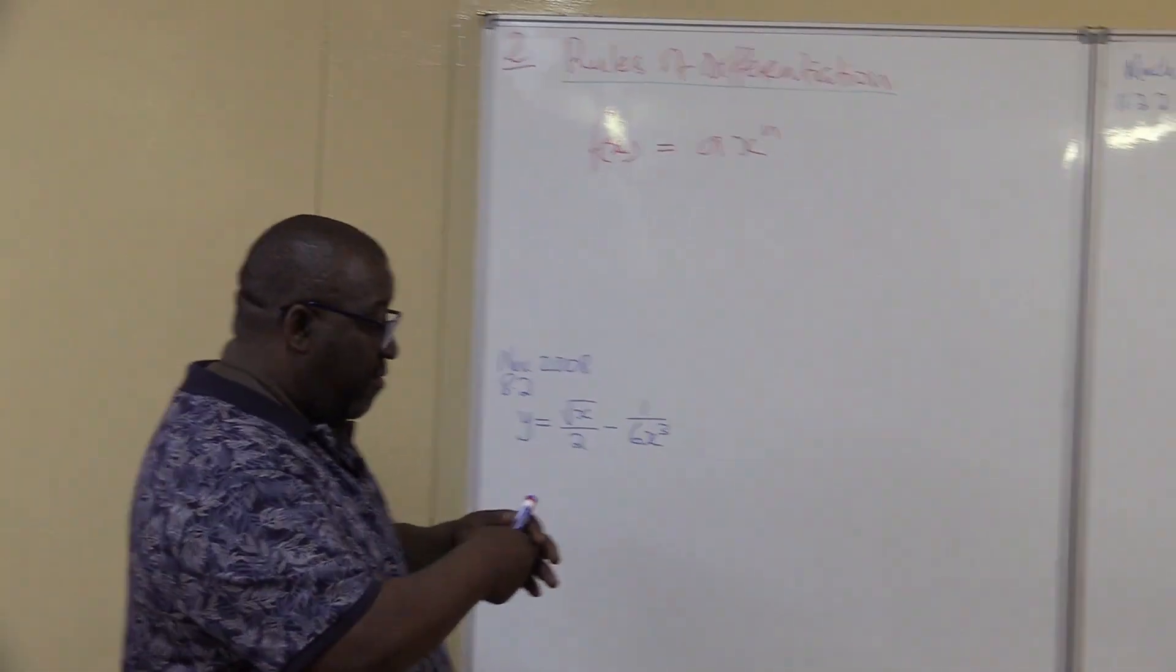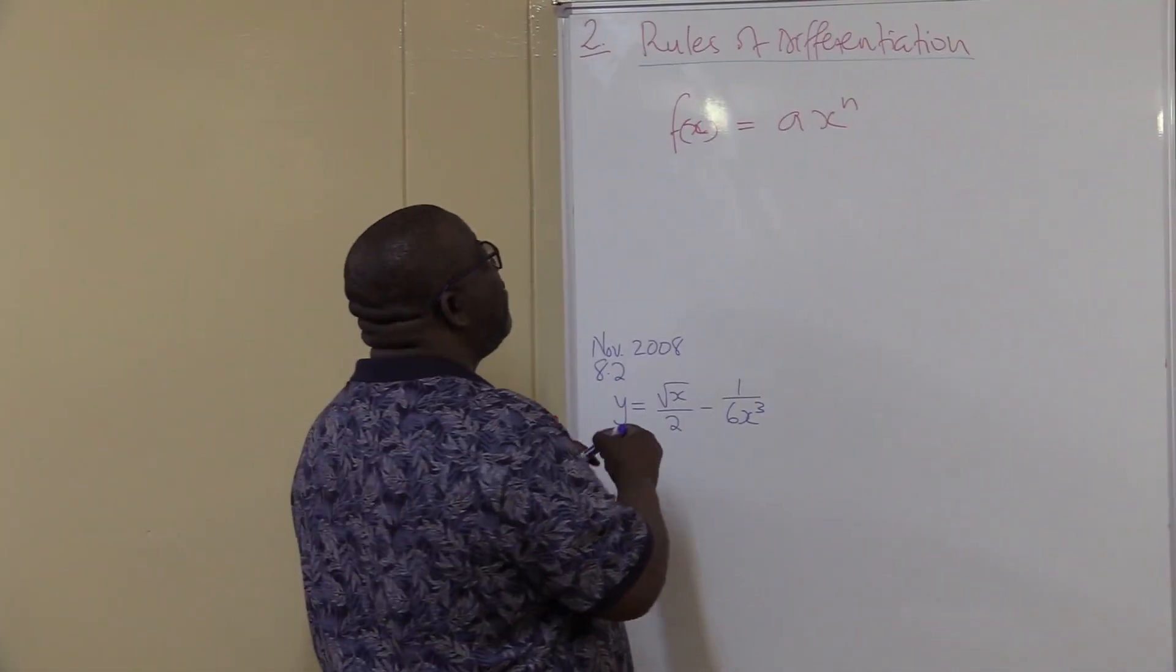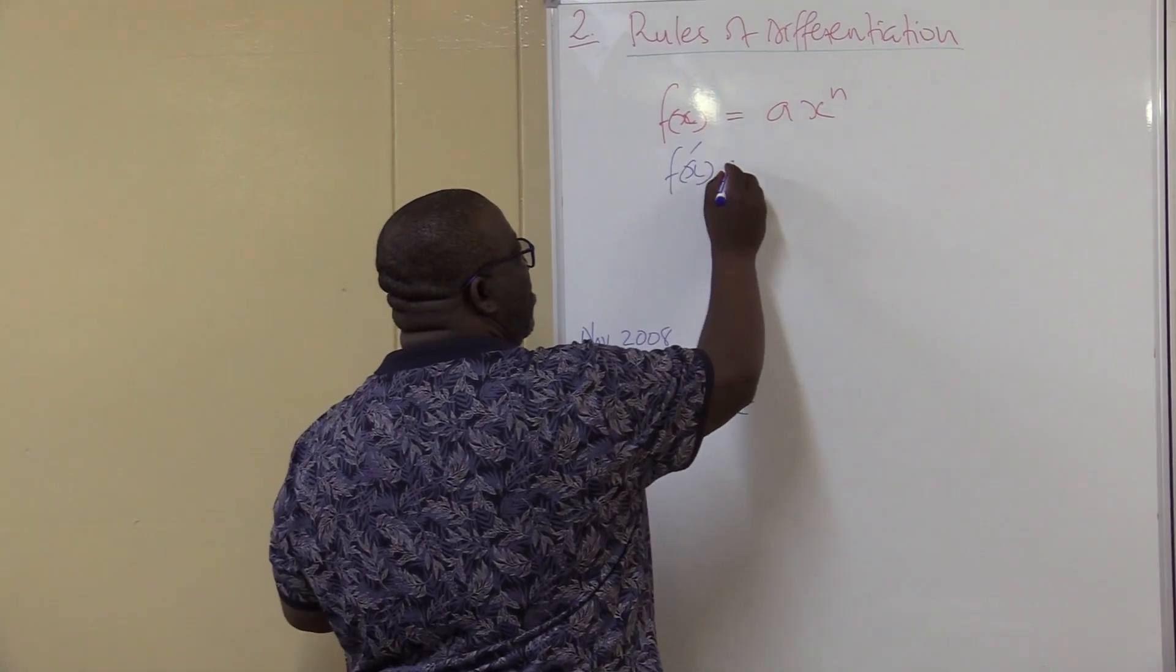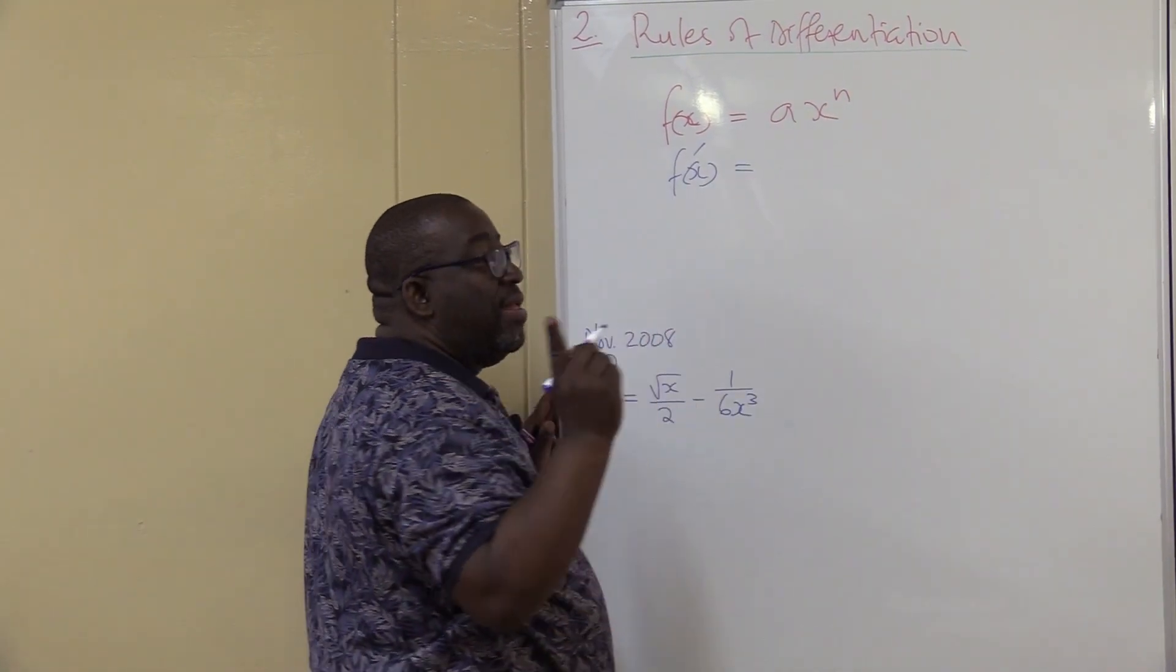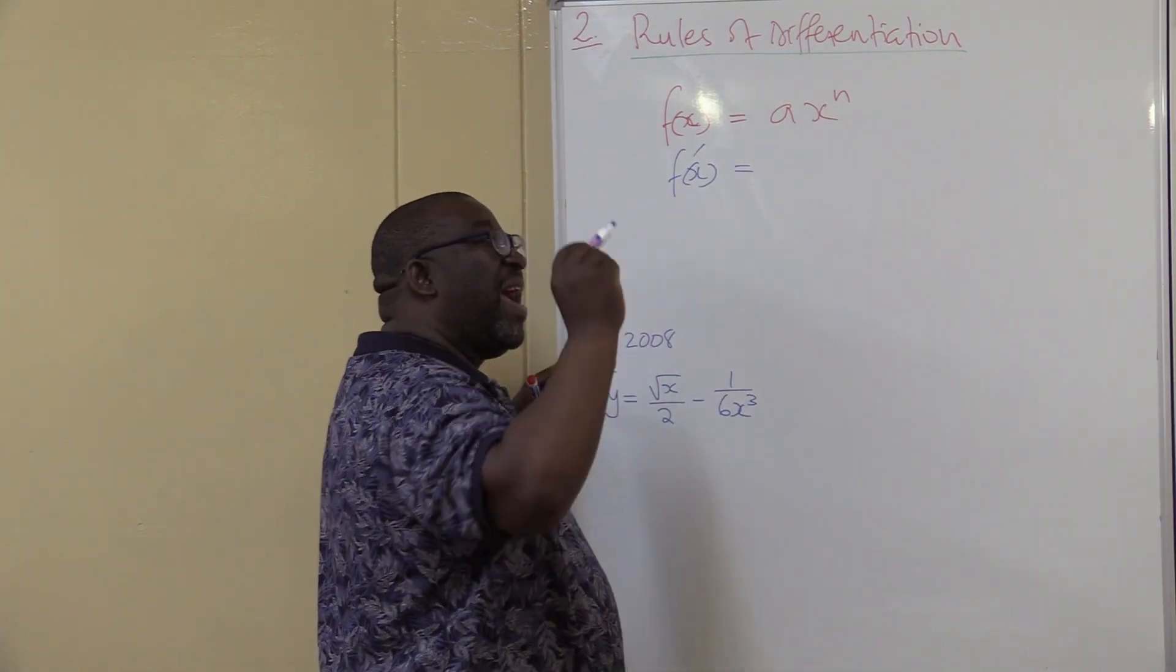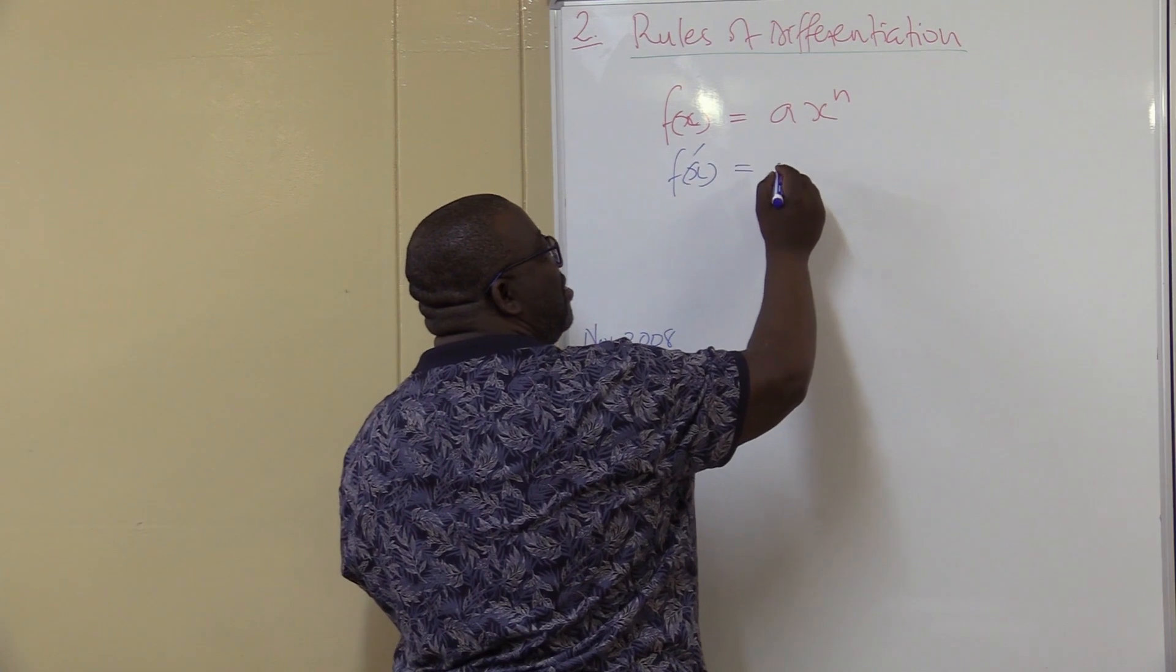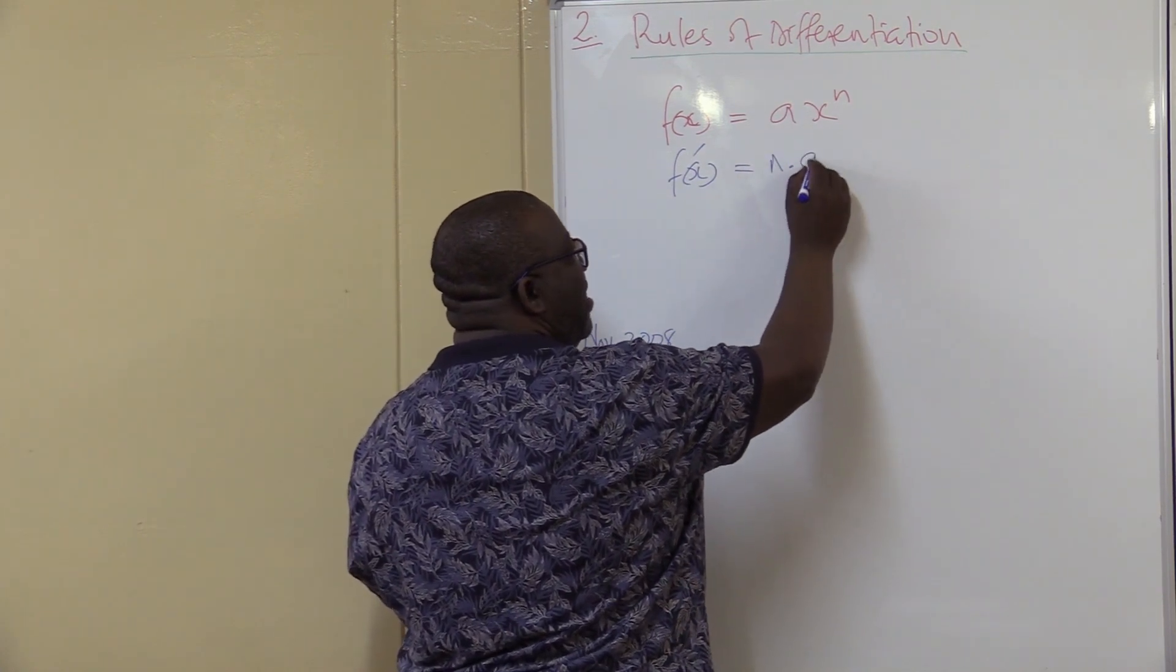Alright, how do I find the derivative? My f of x prime, the gradient or the average gradient would be: the rule says you take the exponent, you multiply it with the coefficient of x.